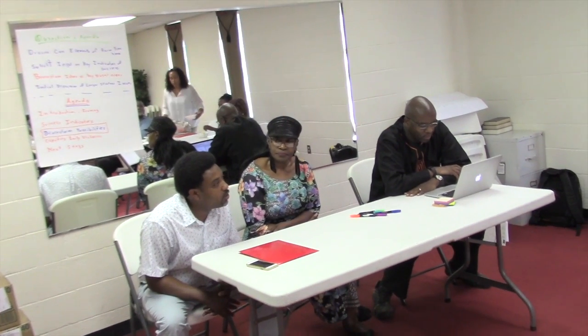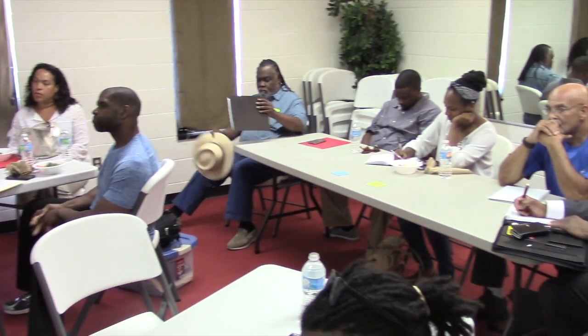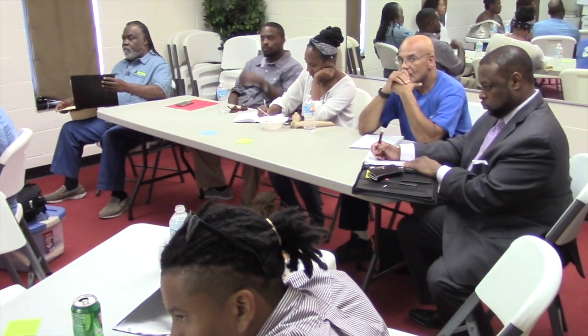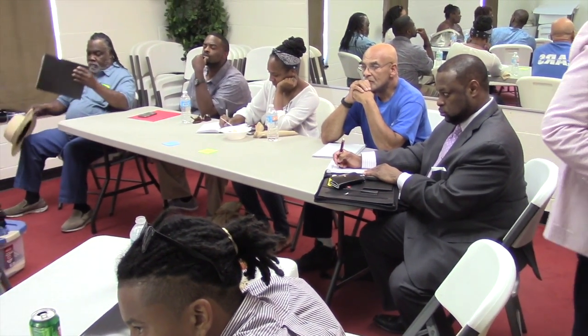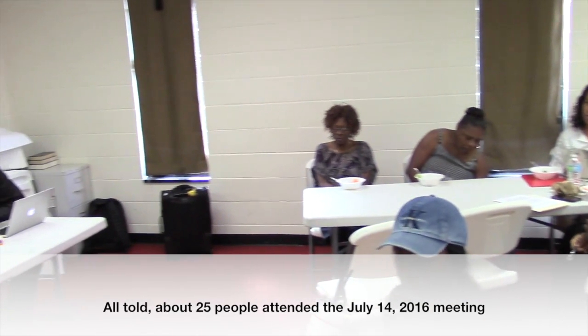Community norms are another type of social harm to address. Finally, family empowerment and healing — defined as what happens to the family and the Black community as a result of institutional harm and failing community norms — things like how people get along and interact with each other in their neighborhoods.